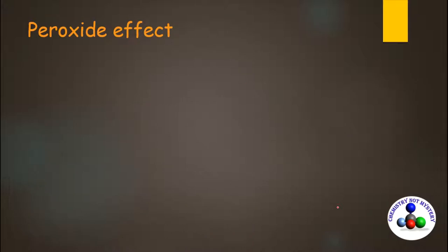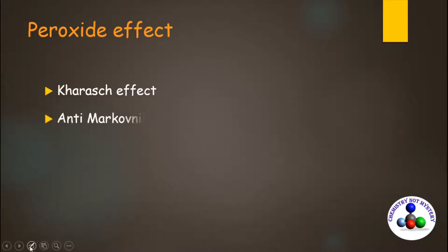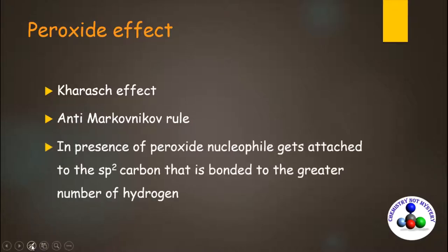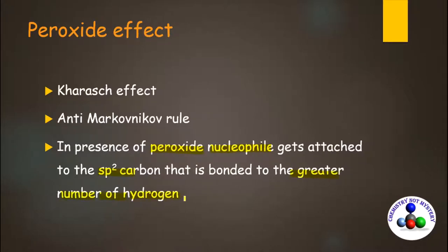So let's start with the peroxide effect. It is also known as the Kharash effect. It is governed by the anti-Markovnikov rule. According to that rule, in the presence of peroxide, the nucleophile — that is the negative part of your reagent — gets attached to the sp2 carbon that is bonded to the greater number of hydrogens. It is just opposite to the Markovnikov rule.